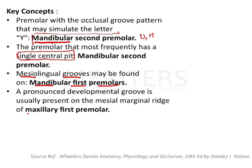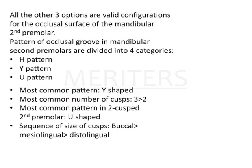The maxillary first premolar shows a pronounced developmental groove on the mesial marginal ridge — this has been asked many times in exams. So in summary: the mandibular second premolar has a single central pit and three types of groove anatomy; the mandibular first molar shows mesolingual grooves; and the maxillary first premolar has a mesial marginal groove on the mesial marginal ridge.